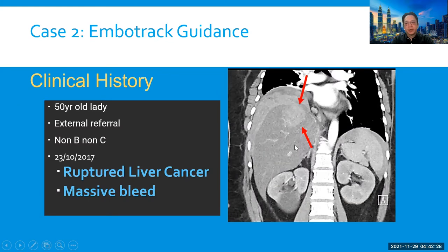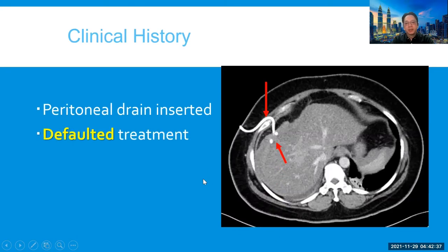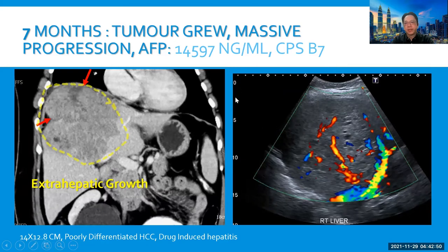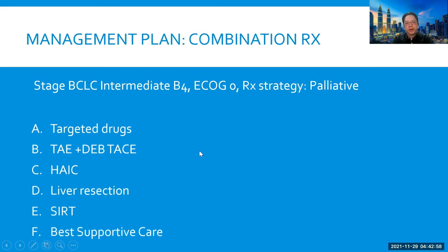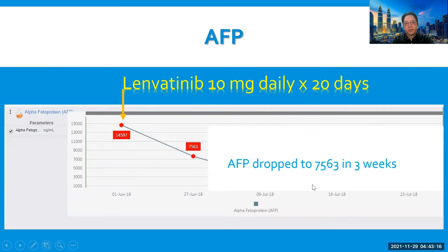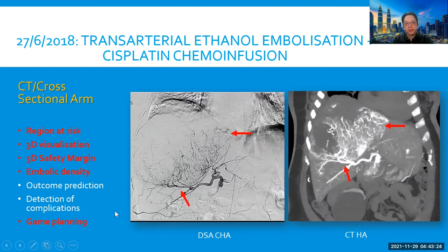Another patient with EmbolTrack guidance — a ruptured 6-cm HCC — was initially only treated with percutaneous drainage and given an appointment at an academic hospital. She departed and sought Chinese herbal treatment. She came back seven months later with massive tumor progression, alpha-fetoprotein of 14,559, Child-Pugh B7, and areas of pending rupture. In view of the advanced stage — BCLC intermediate B4 — the MDT team decided to start with targeted drug lenvatinib, followed by transarterial internal embolization. After 20 days of lenvatinib, the alpha-fetoprotein dropped by 50%, and the patient was taken back a month later for selective transarterial internal embolization with cisplatin chemo infusion, emphasizing the four essential roles of Angio CT in game planning.